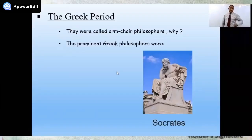Greek, it's long time ago, around, the Greek period was a period of around 2500 to 3500 years ago. They were not considered as scientists, rather they are called philosophers, Greek philosophers.